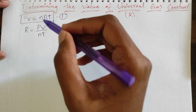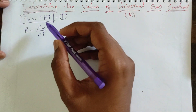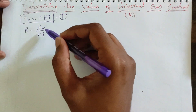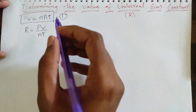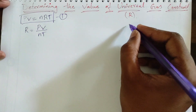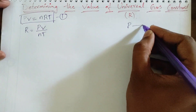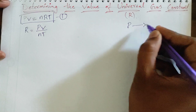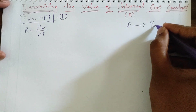Before we substitute values, we have to look at the units. In the ideal gas equation we have pressure, and the unit of pressure we use is Pascal.